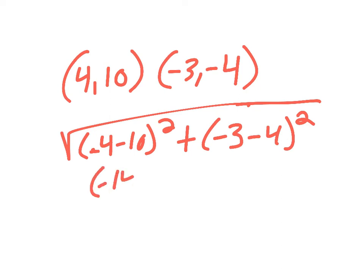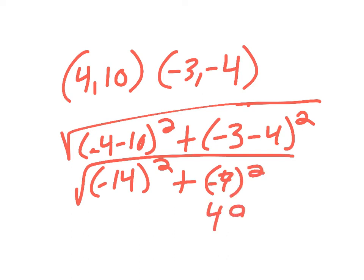So I have negative 14 squared, plus negative 3 minus 7 would be negative 7 squared, that's 49. 14 squared, if I'm remembering correctly, is 196. So 14 times 14 is 196. 196 plus 49 is the square root of 245.